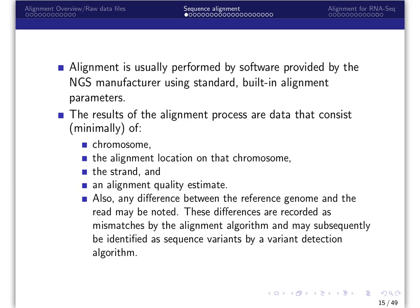Alignment, or mapping the short sequence reads to the reference genome, is usually performed by software provided by the next generation sequencing manufacturer using standard built-in alignment parameters. The results of the alignment process are data that consists minimally of chromosome, the alignment location on that chromosome, the strand, and an alignment quality estimate.